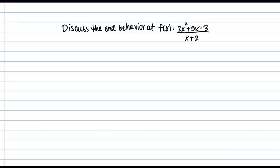In this video, we're going to discuss a kind of end behavior called slant asymptotes. The directions here say to discuss the end behavior of this rational function, f of x equals 2x squared plus 5x minus 3, all over x plus 2.